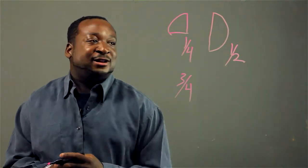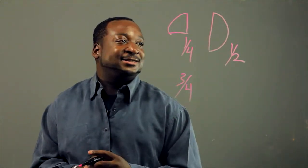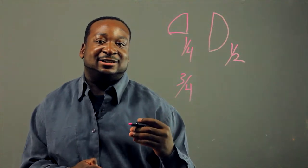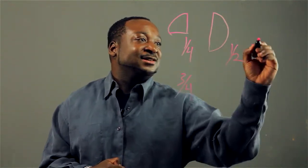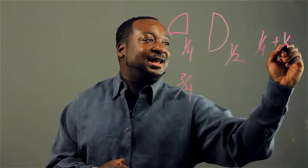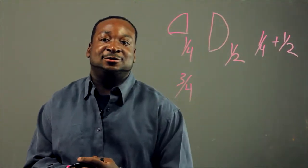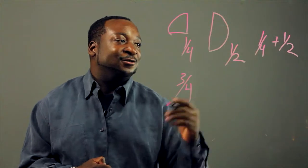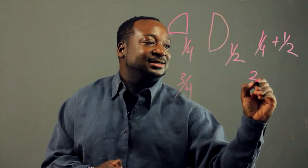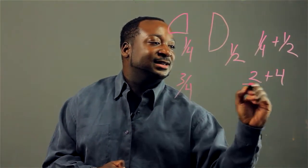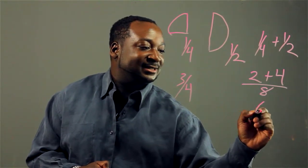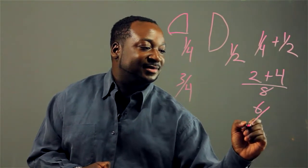The abstract way, if we want to add these two, it's more of a structured approach. We would write one-fourth plus one-half, and we'll do the old method of cross-multiplying: two plus four over eight.